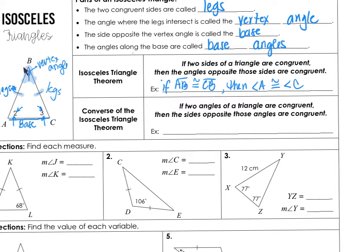So if side AB is congruent to side CB, then angle A is congruent to angle C. The converse is also true: if two angles of a triangle are congruent, then the opposite sides are congruent. So if angle A is congruent to angle C, then side BC is congruent to side AB. If this angle is congruent to this angle, then this side is congruent to this side.